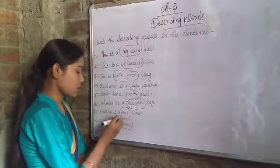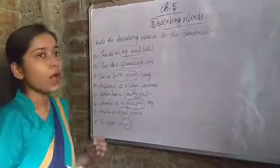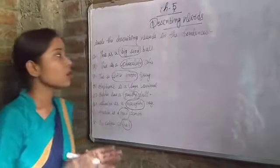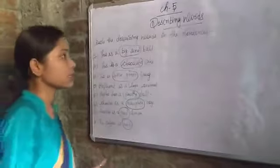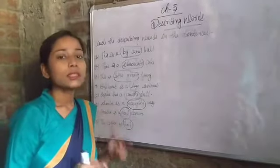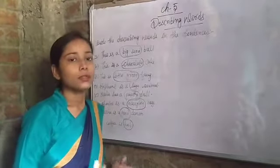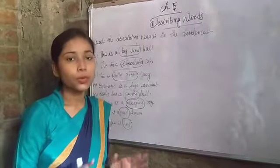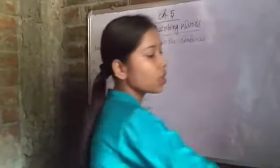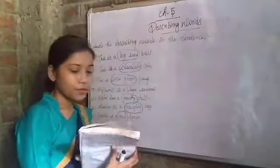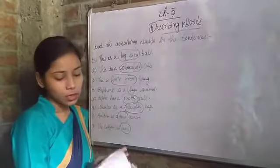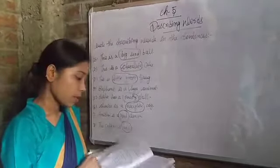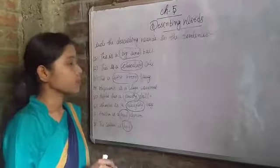So like this, you have to circle all the describing words in the sentences. This is your second exercise — you have to do it in your notebook properly. Now we have the third one, which is the last exercise.